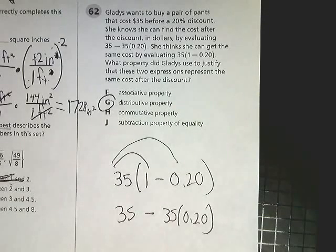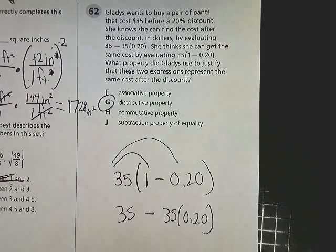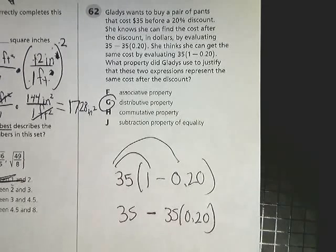Commutative is when I change the order of things like 4 plus 3 becomes 3 plus 4. That's commutative. And the subtraction property of equality, why would that even remotely work here? I mean, what? So no, distributive property. Use the ones you're really comfortable and aware of.